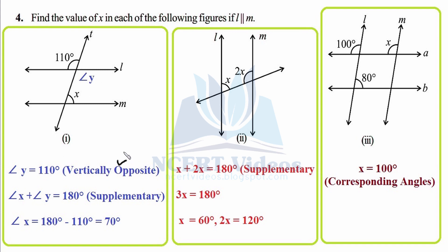Since l and m are parallel, angle x and angle y are interior angles on the same side of the transversal and must be supplementary — adding to 180°. This only applies because l and m are stated as parallel. So angle x plus angle y equals 180°. Therefore, angle x equals 180° minus 110°, which gives x equals 70°.